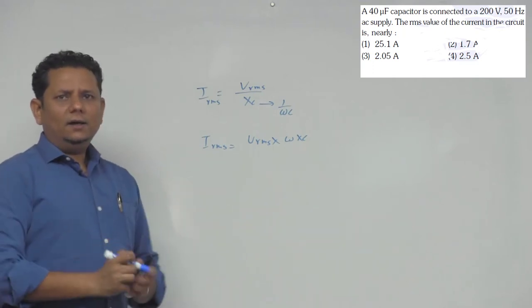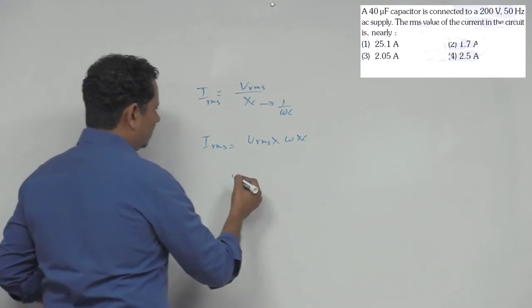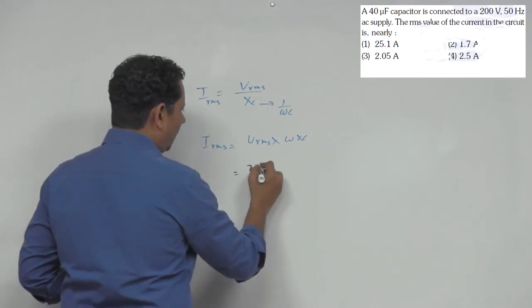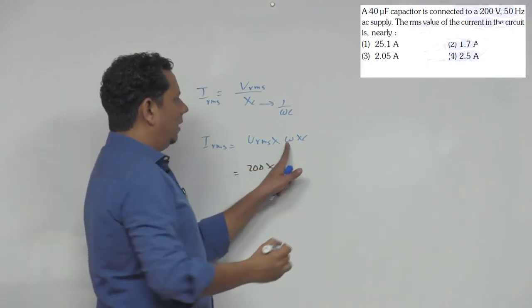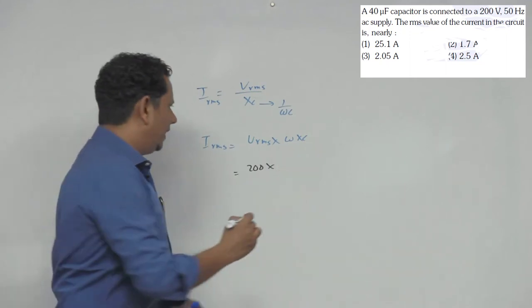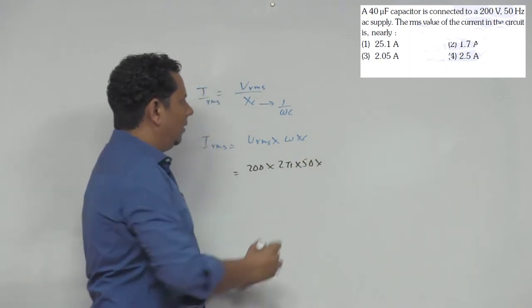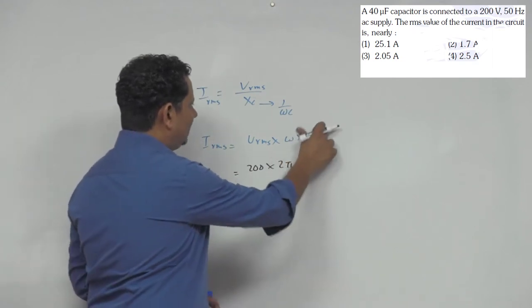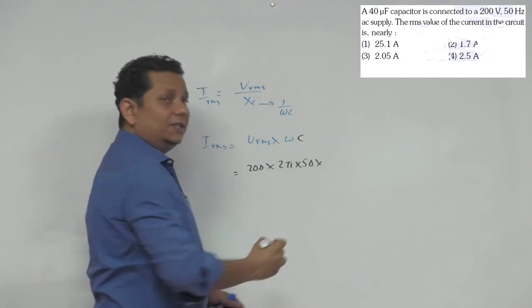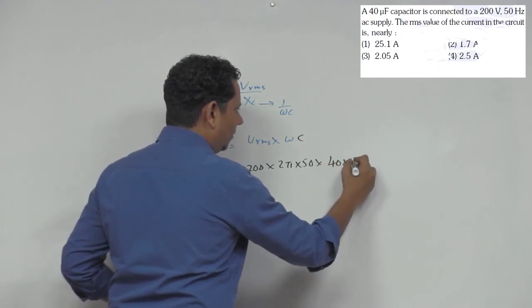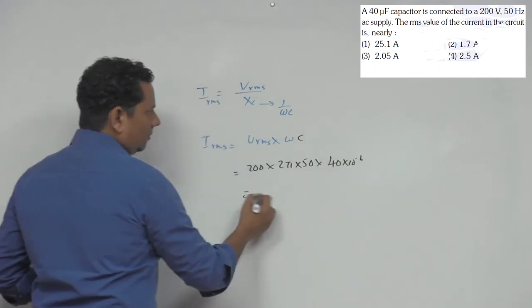data diya hua hai, value daal ke answer aa jayega. So this is equal to V kitna diya hua hai - 200 multiplied by omega ko hum yaha likh denge 2 pi f, so 2 pi multiplied by f. F 50 diya hua hai aur C jo diya hai woh apne ko 40 microfarad, so this is 40 multiplied by 10 to the power minus 6.